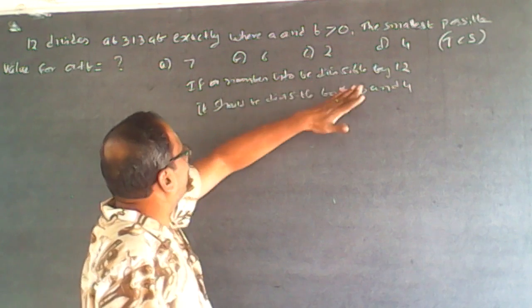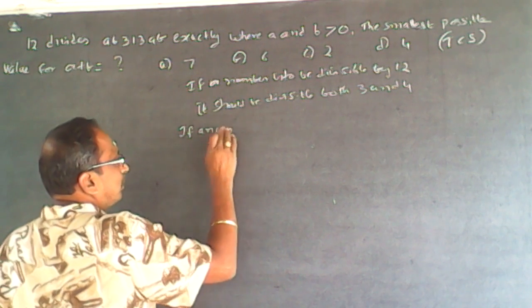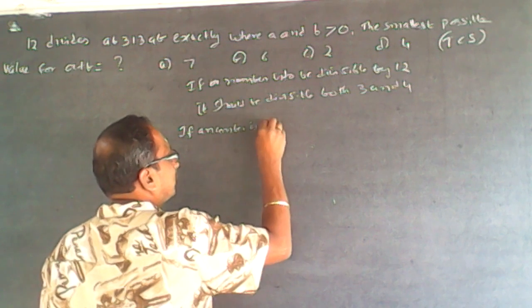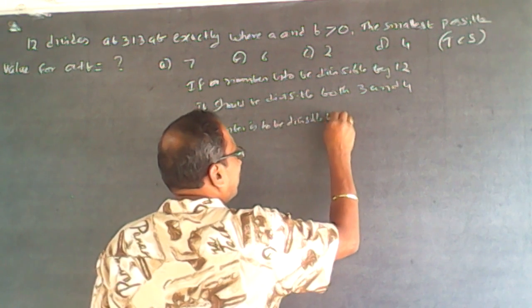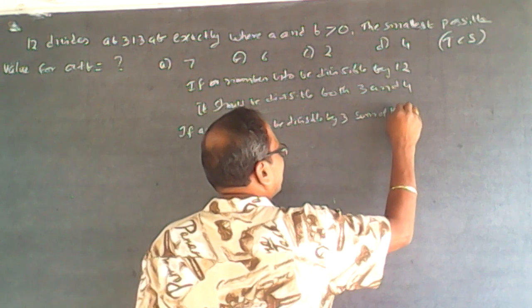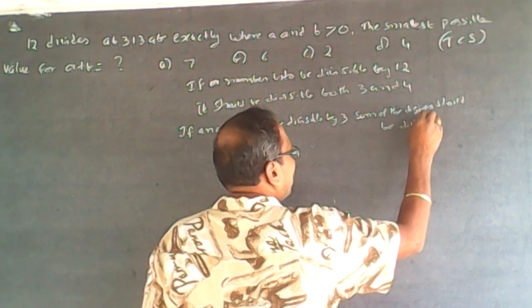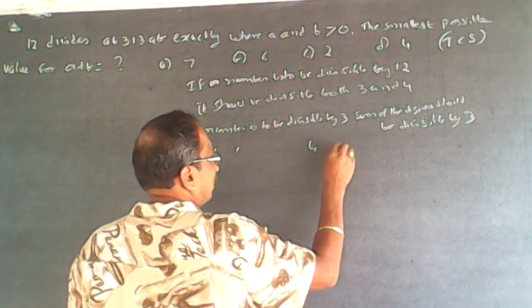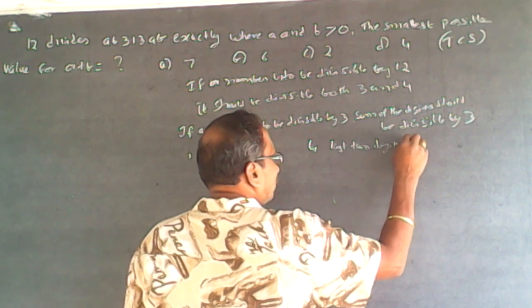The rule of 3 is: if a number is divisible by 3, the sum of the digits should be divisible by 3. And if a number is divisible by 4, the last 2 digits should be divisible by 4.